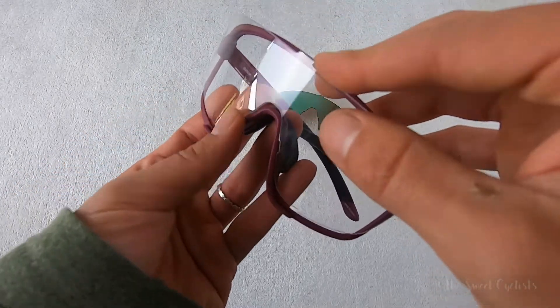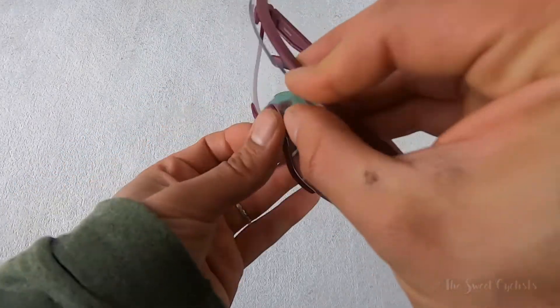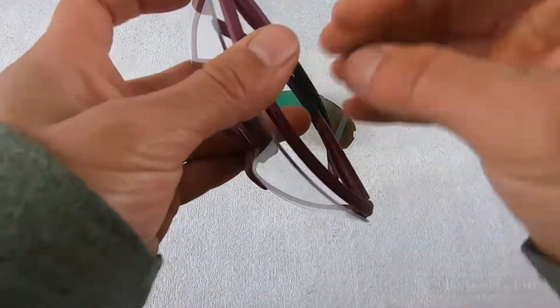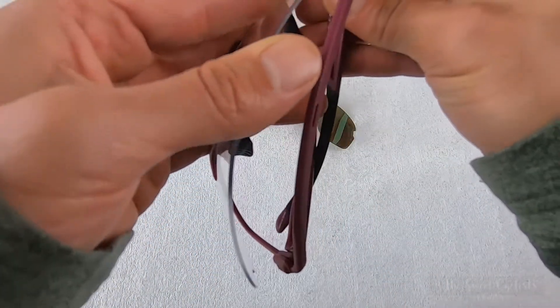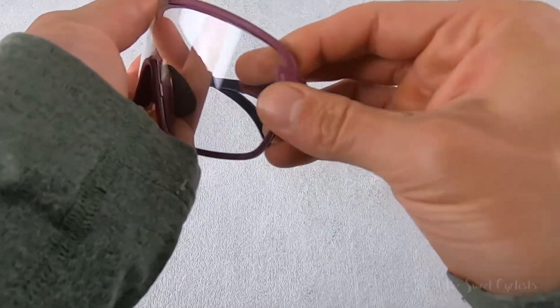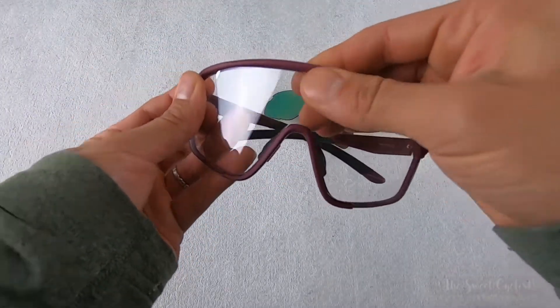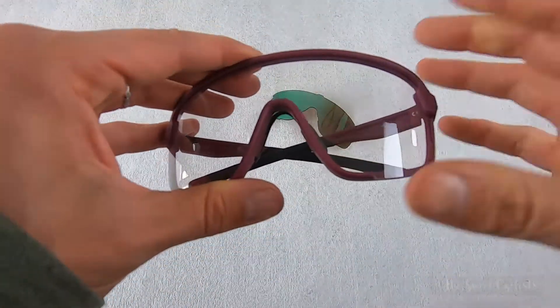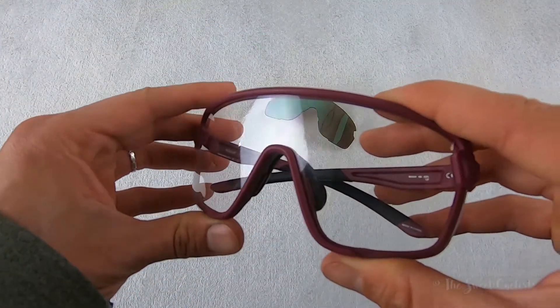To put on the other one you just slide it in. You want to get it on the nose bridge, flex it so that it'll go through the corners, and you have to just apply a little bit of pressure. Pull up on the top and you'll hear everything sort of click into place and that's it, you're ready to ride.